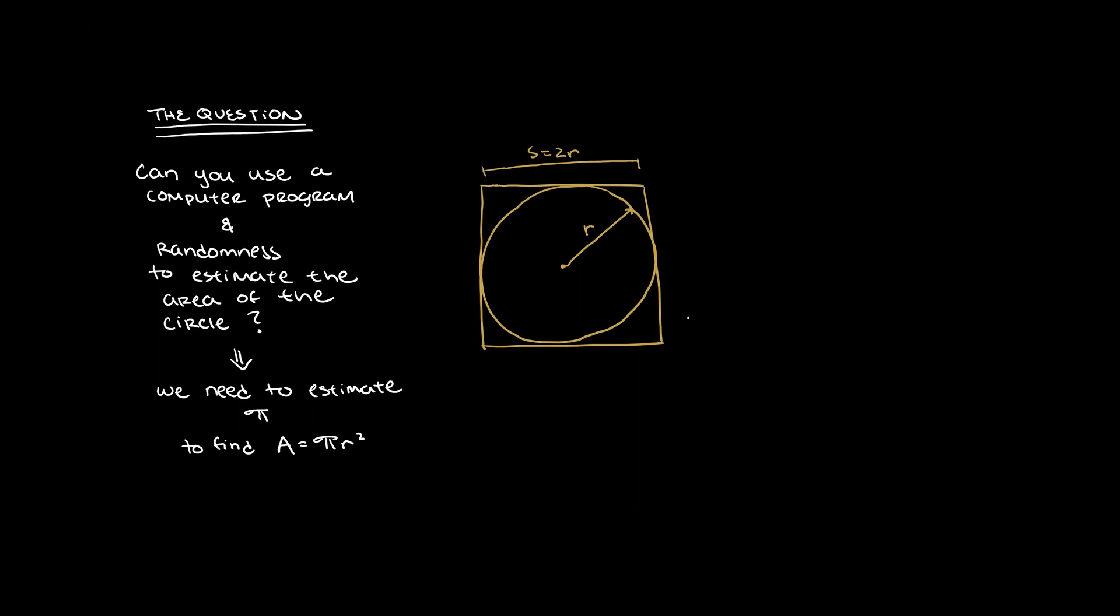What is the area of the circle? Well, you know that. The area is Pi R squared. So let's say the circle has a radius of 50 centimeters, which is a diameter of 100 centimeters.